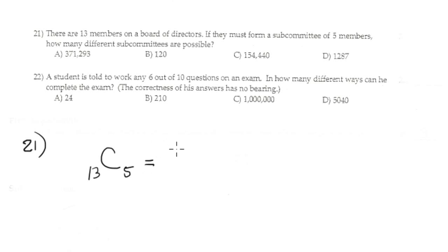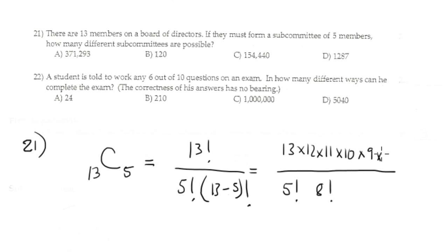The formula, let's do it by formula one time, at least one time. It's 13 factorial divided by 5 factorial times (13 minus 5) factorial. This is 5 factorial, this is 8 factorial.